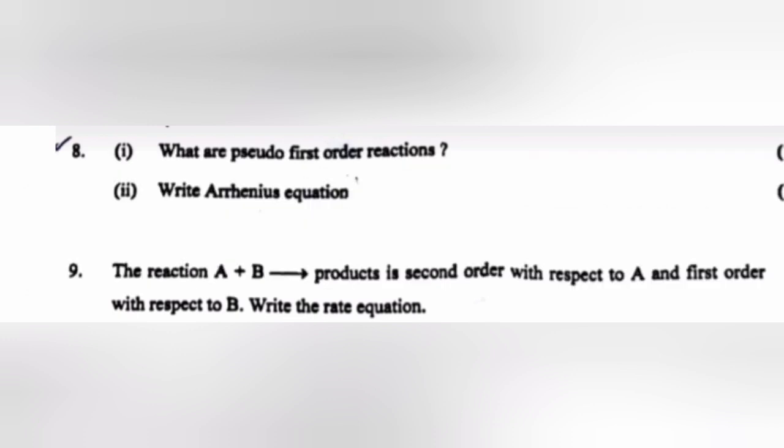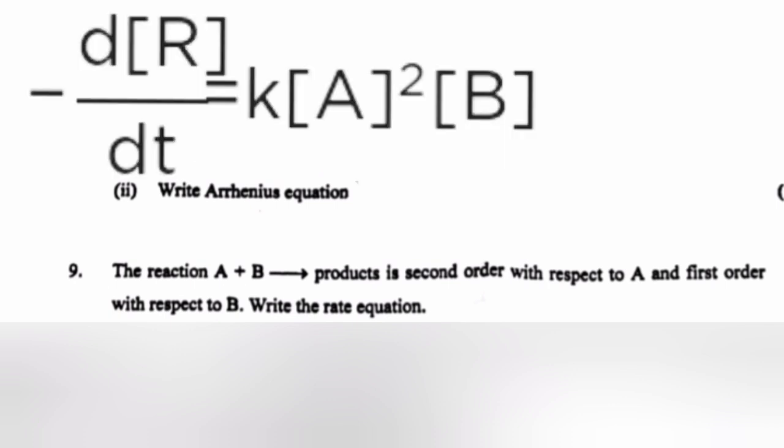9. The reaction A + B gives product is 2nd order with respect to A and 1st order with respect to B. Write the rate equation. Answer: -dr/dt = K[A]^2[B].